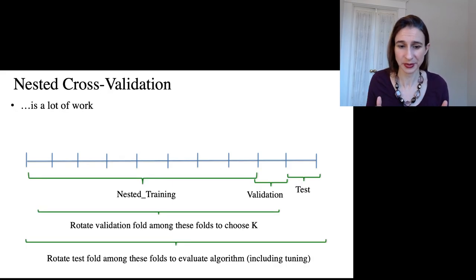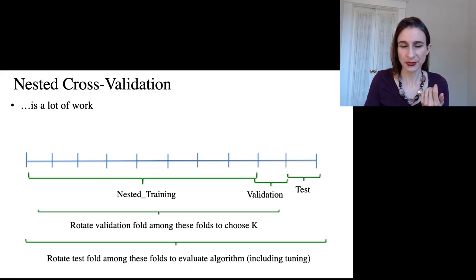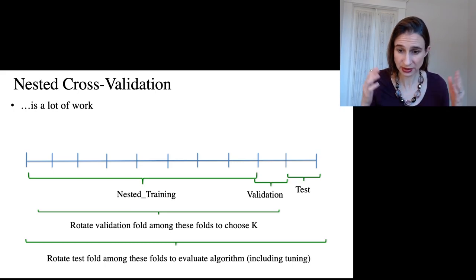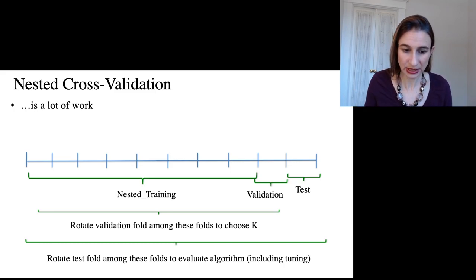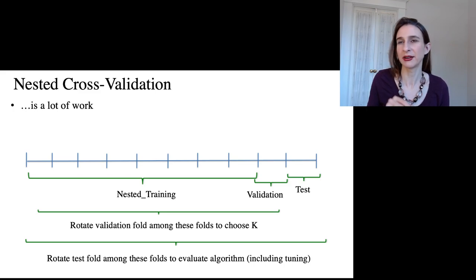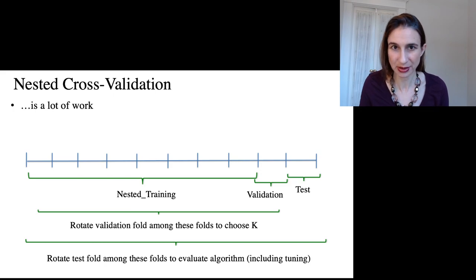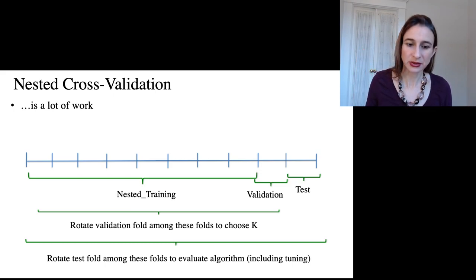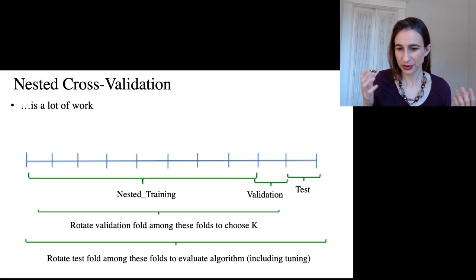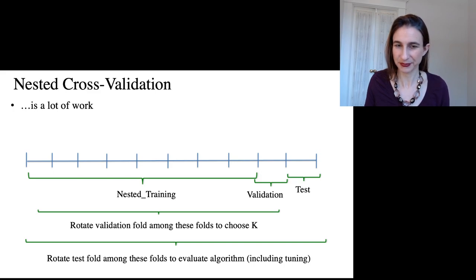Nested cross-validation involves a lot of computation. If you think about a tenfold outer loop, a ninefold inner loop, and five k parameter values, multiplying those numbers together means running the algorithm an enormous number of times. People try to take shortcuts, like reducing the number of parameter choices — instead of k equals 1, 10, 100, 1000, etc., you might only choose three values like 1, 10, 100. Another shortcut is reducing the number of folds used for the inner validation, perhaps down to 5 folds. That's totally fine and will reduce computation a lot.